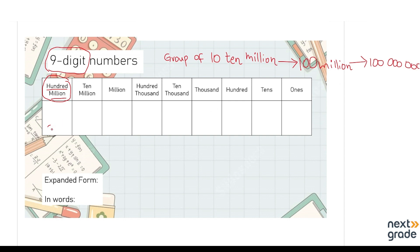Let's discuss it with an example. The number I am going to write is 5, 2, 3, 1, 2, 9, 7, 2, 8. This is a 9-digit figure — you can count to confirm. So this is a 9-digit number.